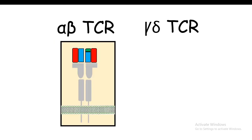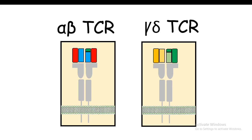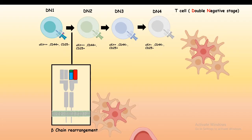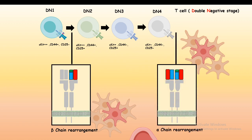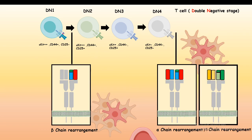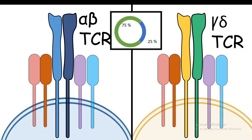Alpha-beta and gamma-delta TCR rearrangements have different probabilities. At the DN1 to DN2 transition, beta chain rearrangement is already done. To become an alpha-beta T cell, only one additional chain — the alpha chain — needs to rearrange. But to become a gamma-delta T cell, two chains must rearrange. Rearrangement of two chains is less likely than rearrangement of one chain, and as a result gamma-delta T cells comprise only about 25% of the total T cell population. It is roughly three times more likely that a T cell will become an alpha-beta TCR-containing T cell than a gamma-delta T cell.